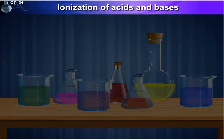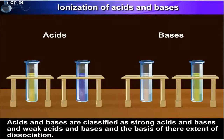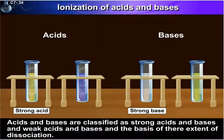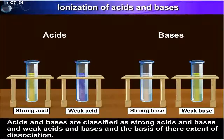Ionization of acids and bases. Acids and bases are classified as strong acids and bases and weak acids and bases, on the basis of their extent of dissociation.